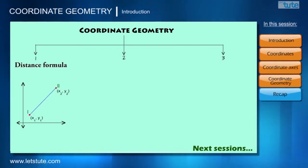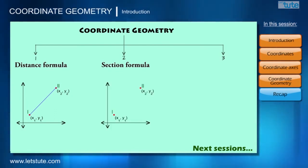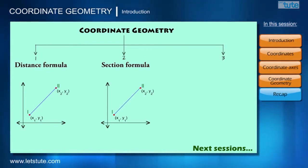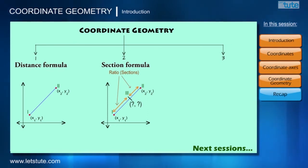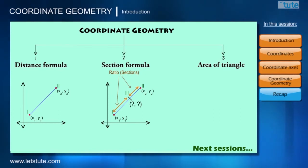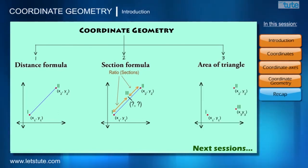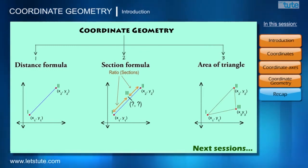The second concept is the section formula: when two points are given with their coordinates, we find the coordinates of a third point lying on the line segment joining them, dividing it in a given ratio. The third concept is the area of a triangle: given three points with their coordinates that form a triangle, we find the area of that triangle.